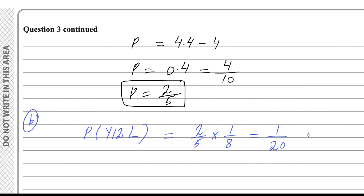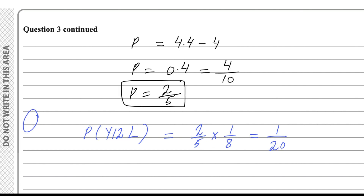So 1 over 20 is the answer for part C. Part C is done.